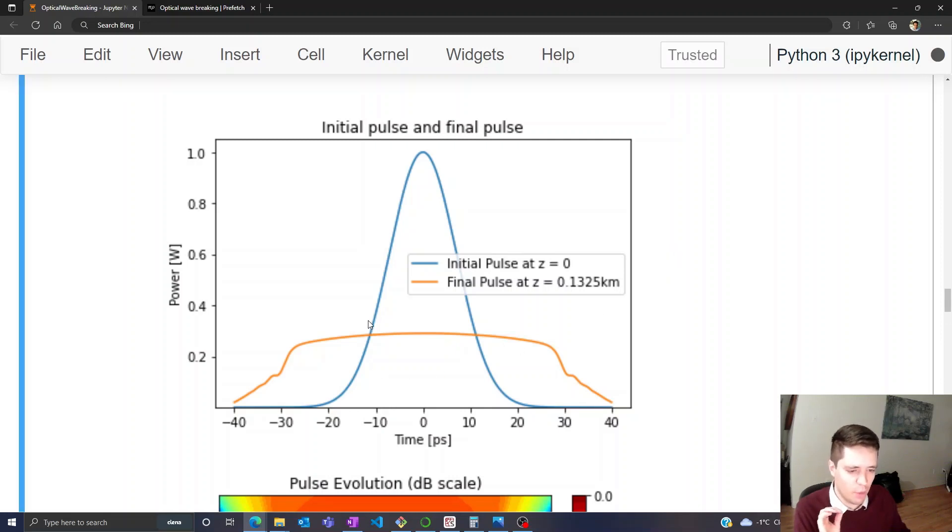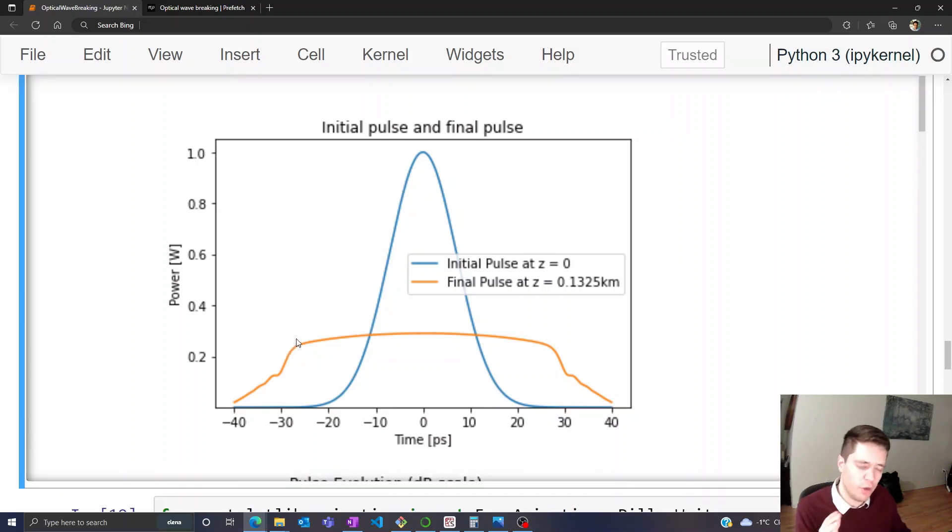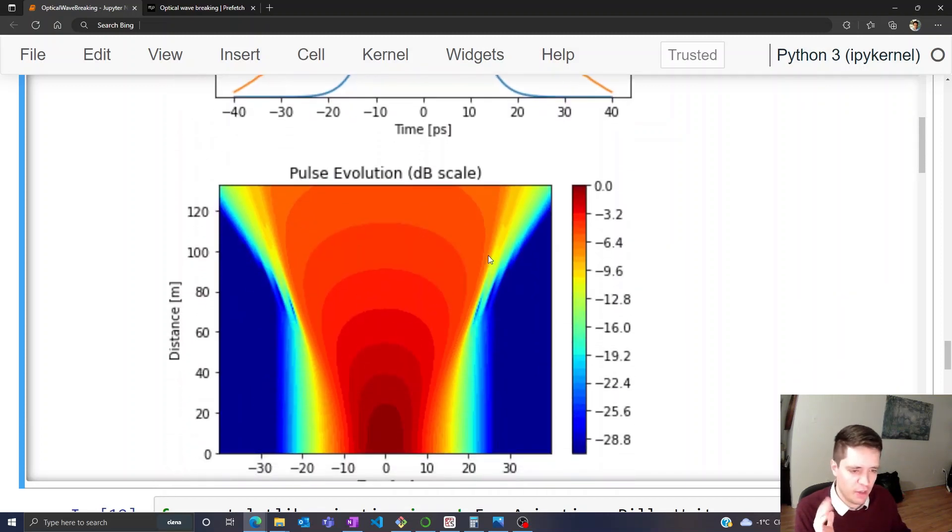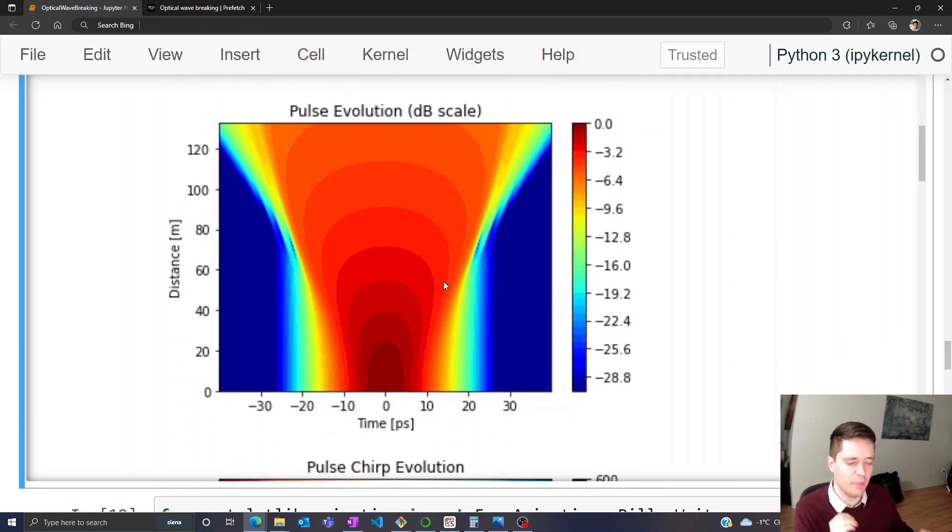Okay, so now we definitely get something a lot more interesting. We can see that the pulse is much more broader this time and has this sort of weird flat behavior on top. And if we check the 2D plot here, we can see a bit more detail of what actually happens.